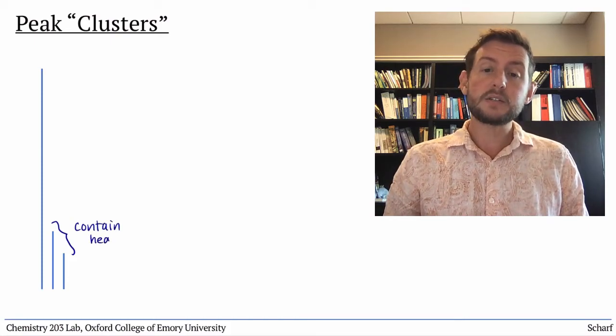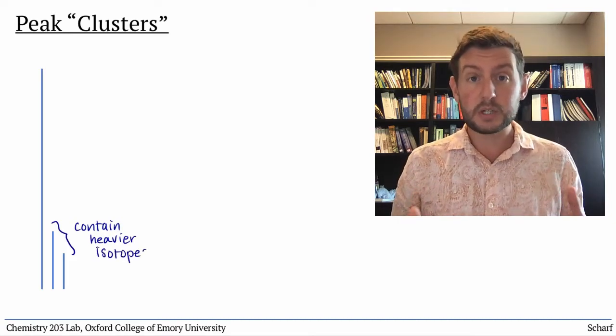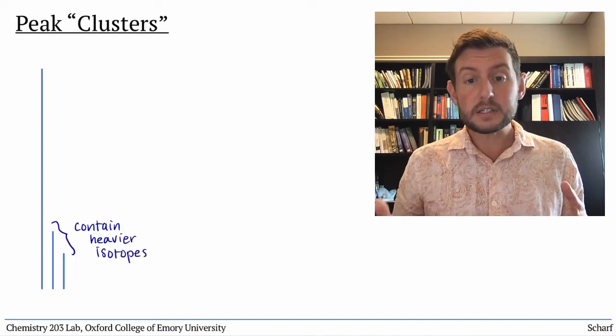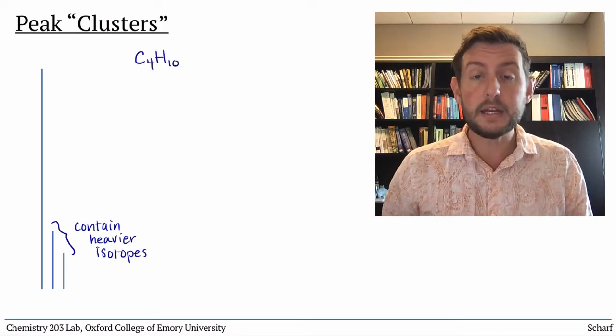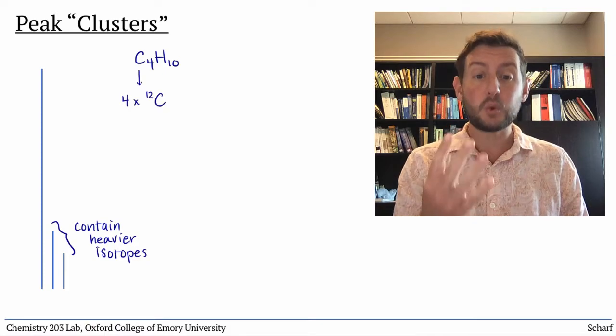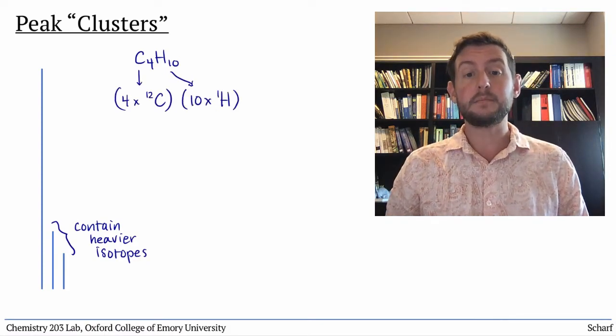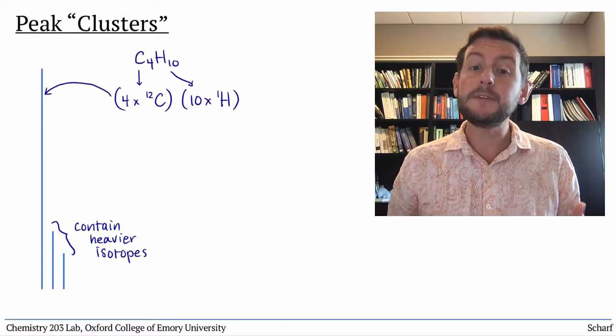The smaller peaks represent molecules that contain heavier isotopes than the most common ones. For instance, most molecules of butane, C4H10, contain 4 carbon-12 atoms and 10 hydrogen-1 atoms, so have a mass of 58 AMU.